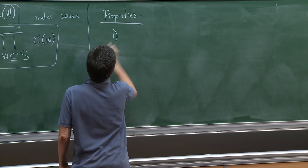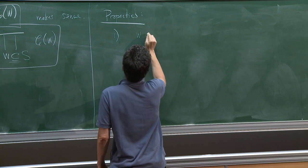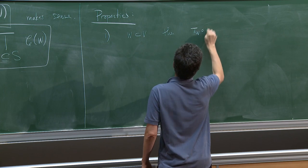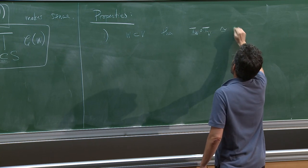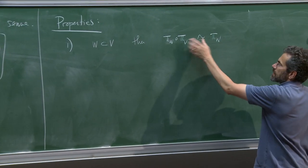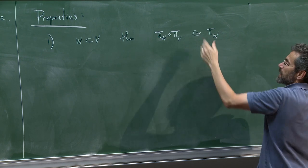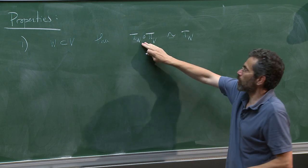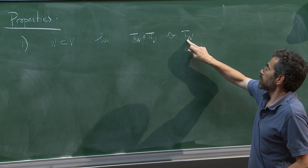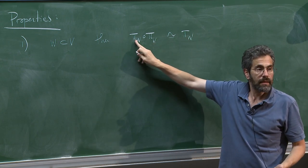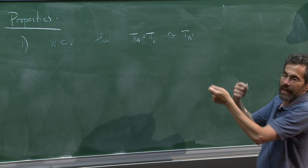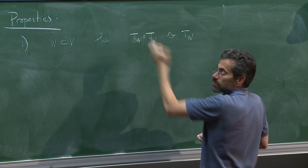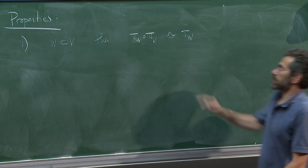Properties. Here's a kind of trivial one. If W is a subsurface inside V, which is another subsurface, then pi_W composed with pi_V is basically the same as pi_W. What I mean is that the images, applied to anything, are bounded distance apart in the image space — where the bound is some uniform number. This is more or less obvious: here you intersect with W, and here you first intersect with V and then intersect with W. The only thing that might mess this up is the random choices — maybe for W you chose one arc and for V you chose some other arc — but that only gives bounded error.